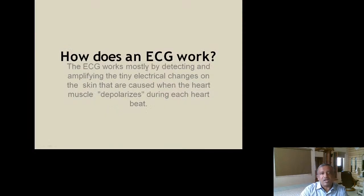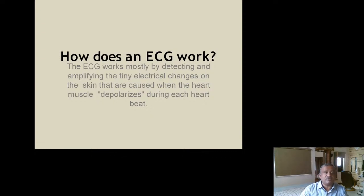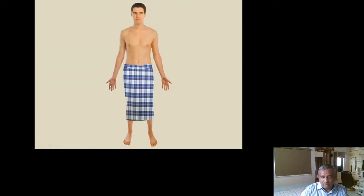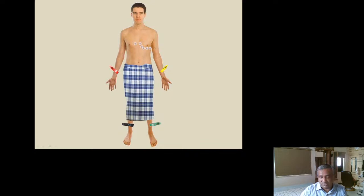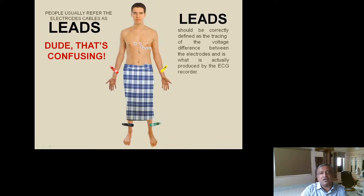The ECG works by detecting and amplifying the tiny electrical changes on the skin caused when the heart muscle depolarizes and repolarizes during each cardiac cycle. These electrical changes are detected, amplified, and recorded as an ECG tracing. The patient lies supine with all electrodes placed — left arm yellow, right arm red, left leg green, right leg black — plus chest electrodes V1 to V6. The electrodes are often referred to as leads, though technically the leads are the connections.